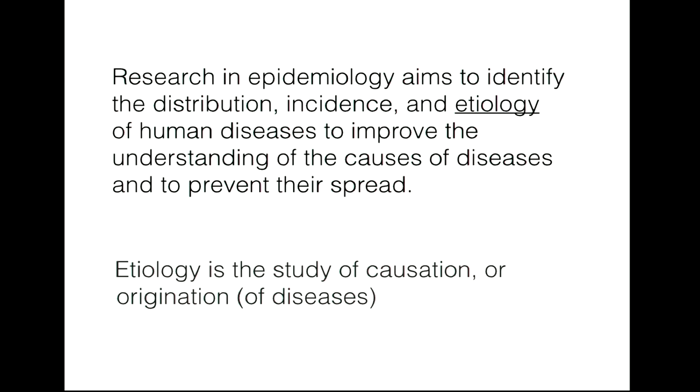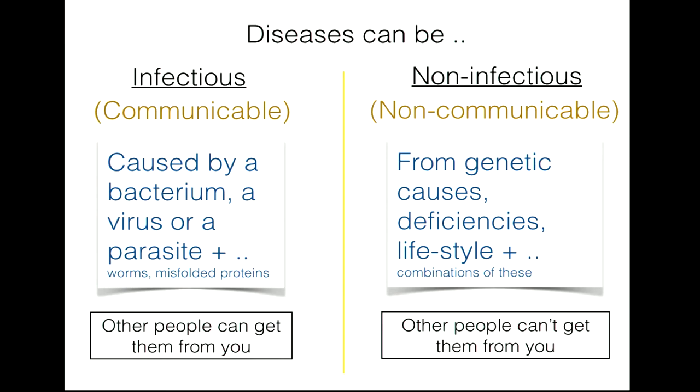Diseases can be infectious or non-infectious—an equivalent word is communicable or non-communicable. An infectious disease is caused typically by a bacterium, a virus, or a parasite. You could also have diseases caused by worms, misfolded proteins, or prion proteins, and the word infectious or communicable simply means that other people can get them from you. Non-infectious diseases typically come from genetic causes, deficiencies in the diet, lifestyle, or various combinations of these causative effects, and other people cannot get them from you.